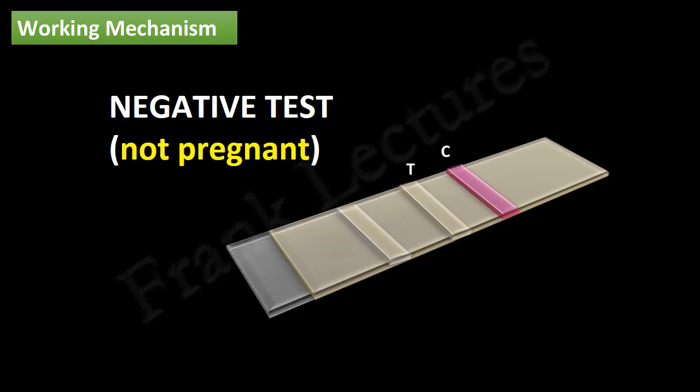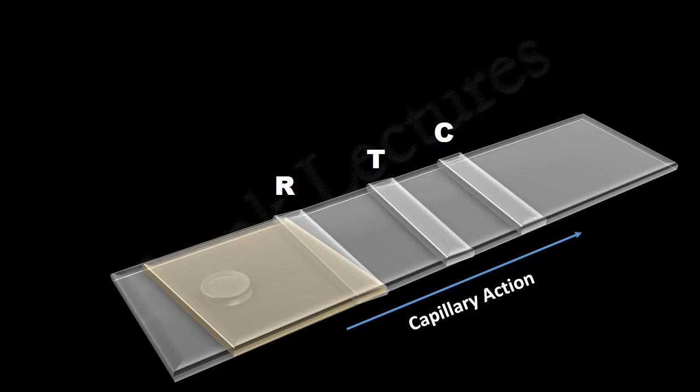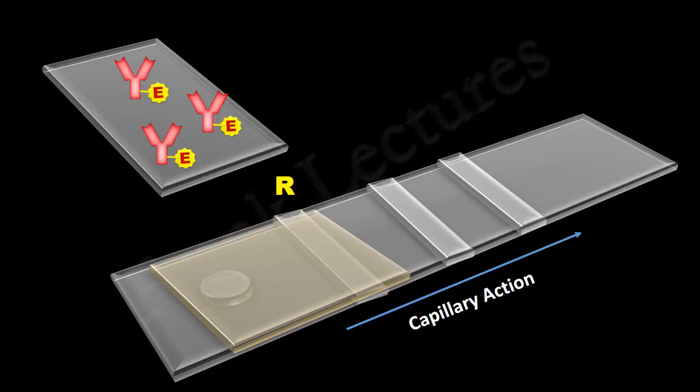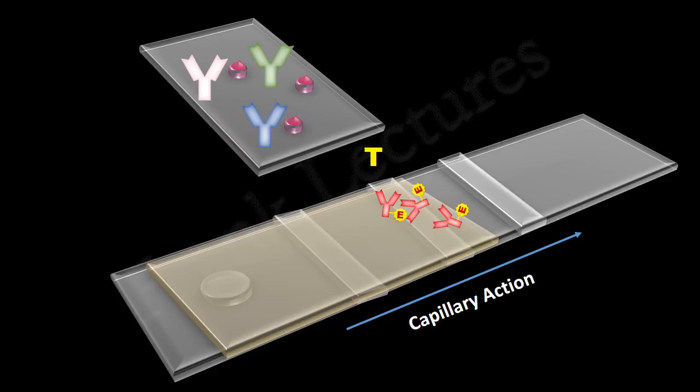In a negative pregnancy test, there is only one colored line, and that is in the C-zone. Suppose the urine sample applied in the pregnancy test strip does not have HCG. The urine sample will flow to the reaction zone by capillary action. When urine arrives at the reaction zone, the antibodies have nothing to bind to, because urine lacks HCG. But because the reaction zone antibodies are loosely attached to the strip, they get detached and move further with urine. When these reaction zone antibodies reach the test zone, they cross this zone without any interaction, because test zone antibodies are specific for HCG molecules, and no HCG is present.